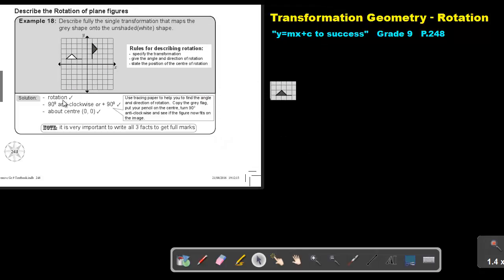I'm going to start with saying it's a rotation. I get one point. It's 90 degrees anticlockwise or positive 90 degrees. And it's about the center. Where did I put my pen or pencil when I did the rotation? There at the center, at the origin, zero, zero.